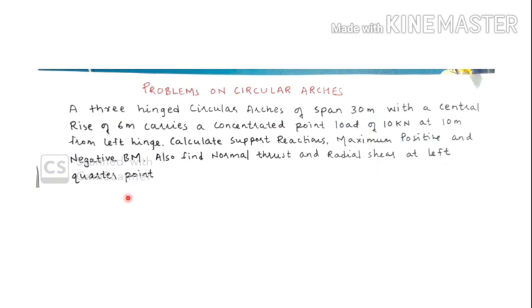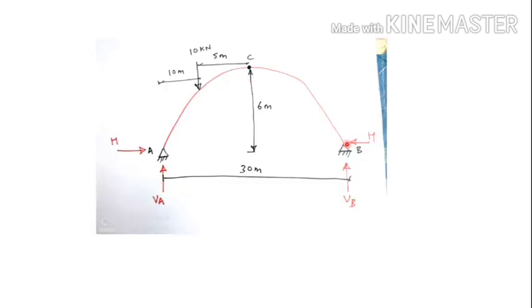They are asking us to find normal thrust and radial shear at left quarter point. This is the diagram. We have calculated the support reactions in the previous video and also calculated the maximum positive bending moment which is in span AC and maximum negative bending moment which is in span BC.